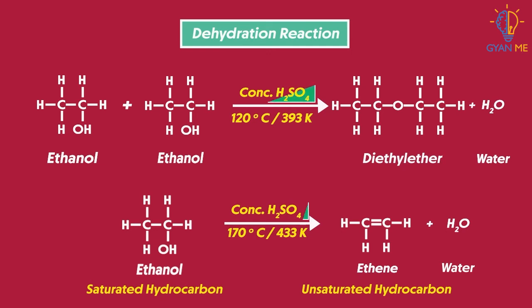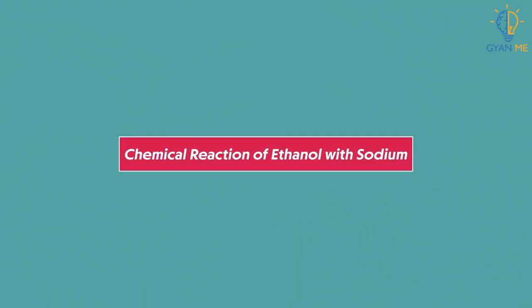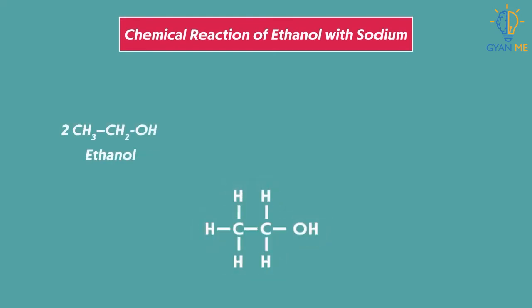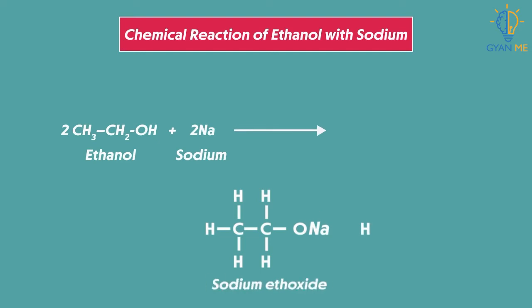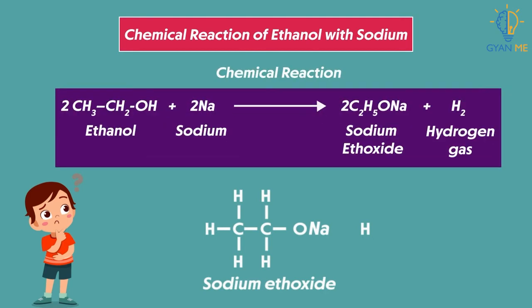The concentrated sulfuric acid here acts as a dehydrating agent, which removes water from ethanol. Now let's learn about the chemical reaction of ethanol with sodium. The reaction of ethanol with reactive metals like sodium produces a stable molecule of sodium ethoxide. Also, ethanol loses its hydrogen to produce hydrogen gas.